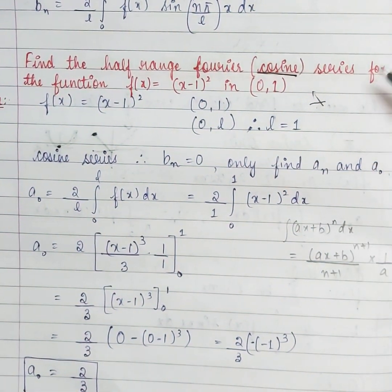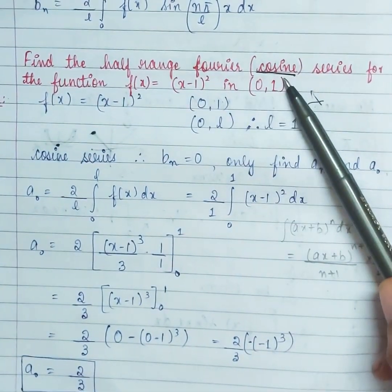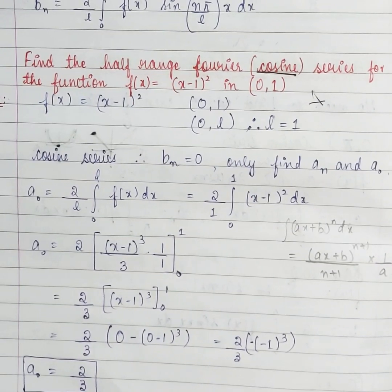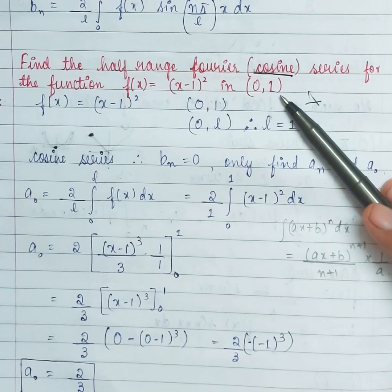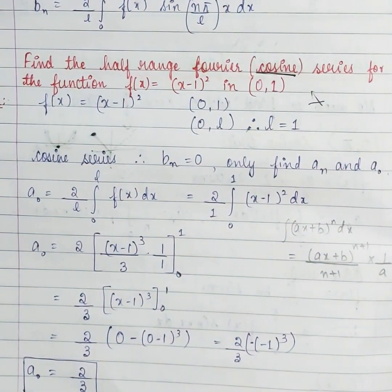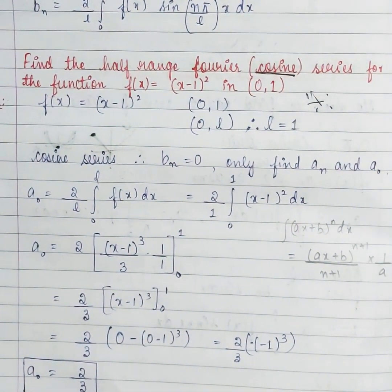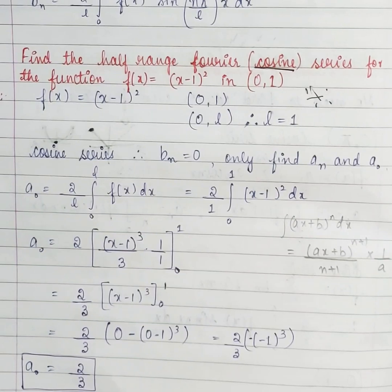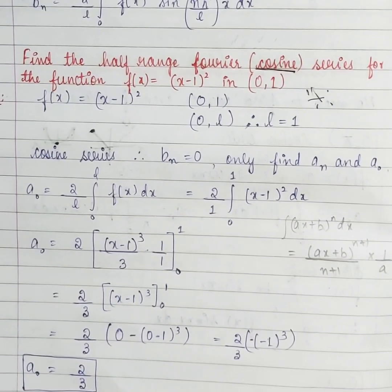How do we identify that it is a half range? They have given it clearly in the question as 'half range'. Even if they don't mention this word, Fourier cosine series means half range. Cosine means half. If the same question were full range, you would compare 0 to 1 with 0 to 2L, giving L = 1/2. But in half range there are only two intervals: 0 to π and 0 to L. So L = 1. Because if L is wrong, all the integration and constants will go wrong. For cosine series, BN = 0; we only find A0 and AN.